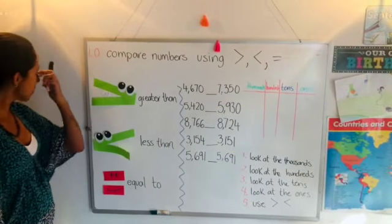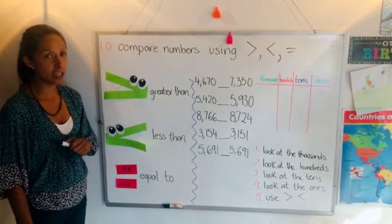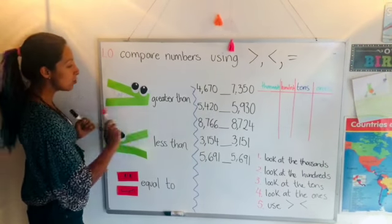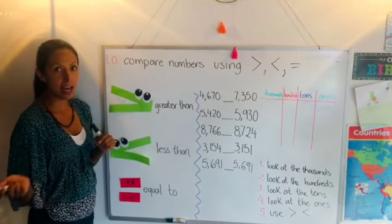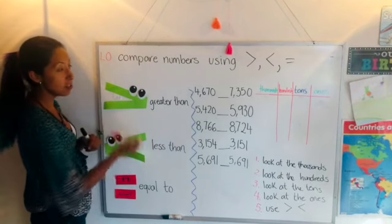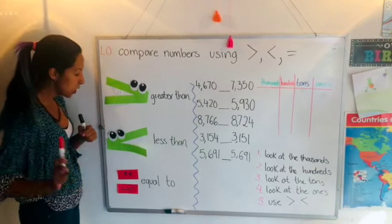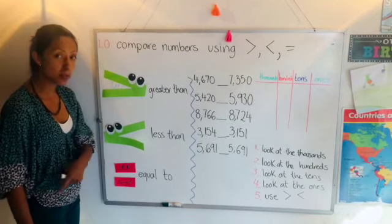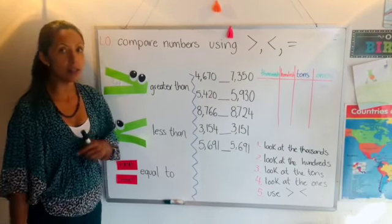So here we have our friend alligator and this one is called greater than and it's always facing towards the left and this one is called less than facing towards the right and here we have equal to.